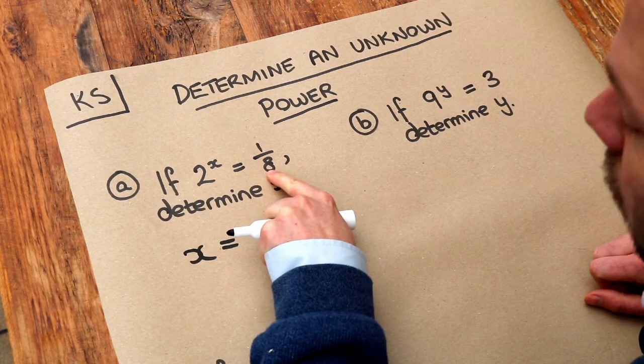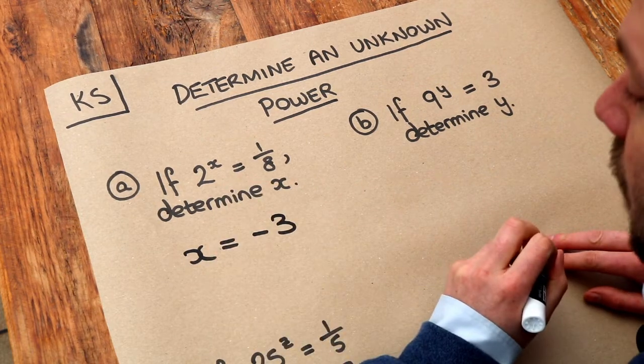And then, well, 2 to the power of what is 8? Well, it's 3. So the answer must be minus 3.